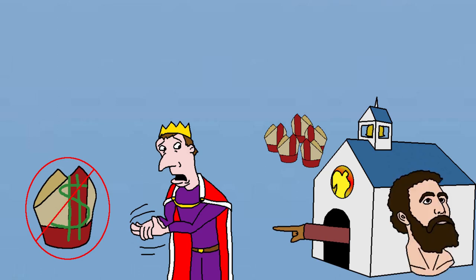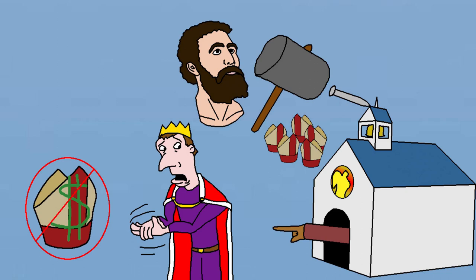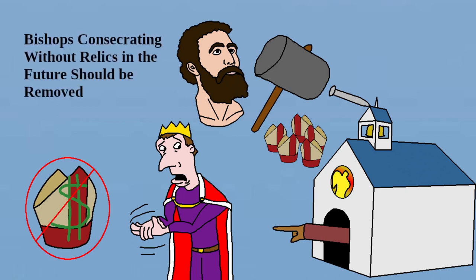The use of the relics of martyrs in consecrating churches was restored. This was a practice that the iconoclasts hadn't followed, despite a large number of martyrs that they'd had, and any churches that had been consecrated without relics were to have relics installed. In the future, bishops consecrating without relics should be deposed.